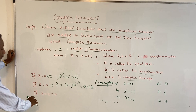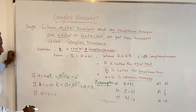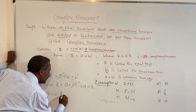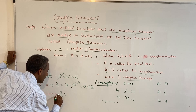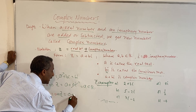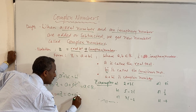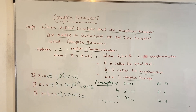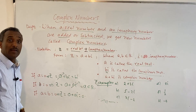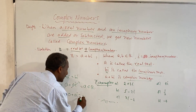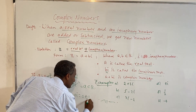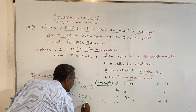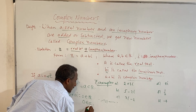What will happen if both A and B are zero? Then Z is zero. Zero is also an element of the real numbers and also an element of the complex numbers.